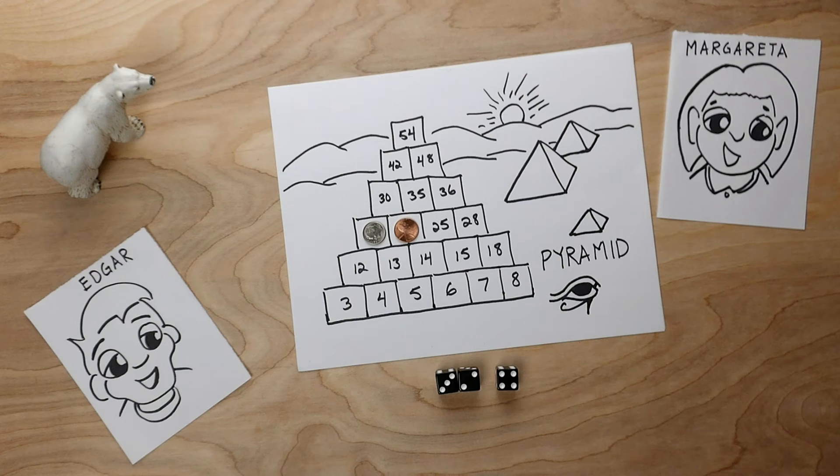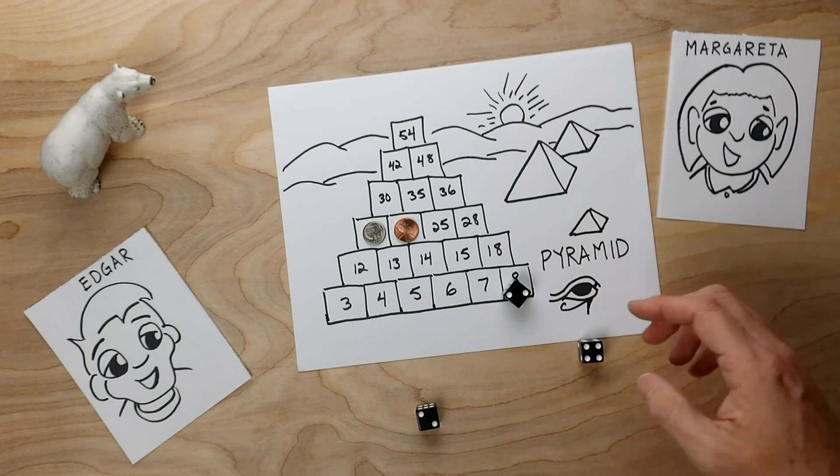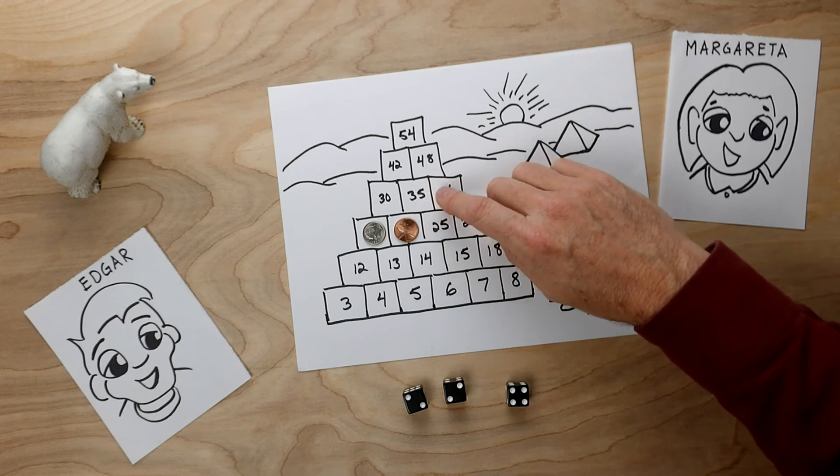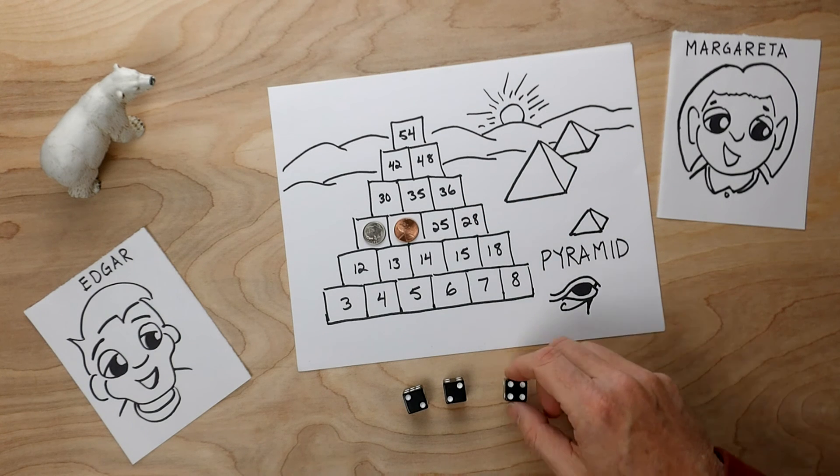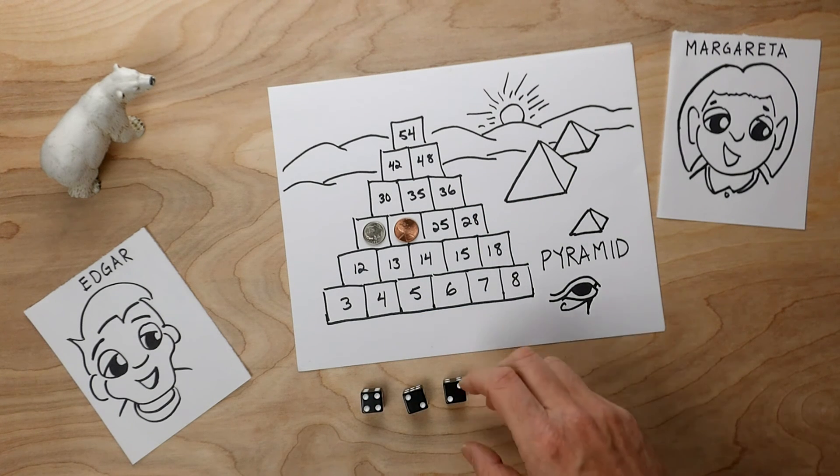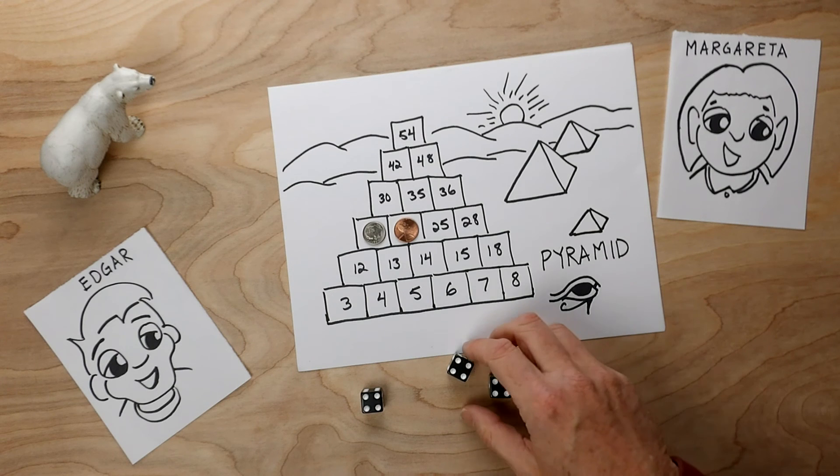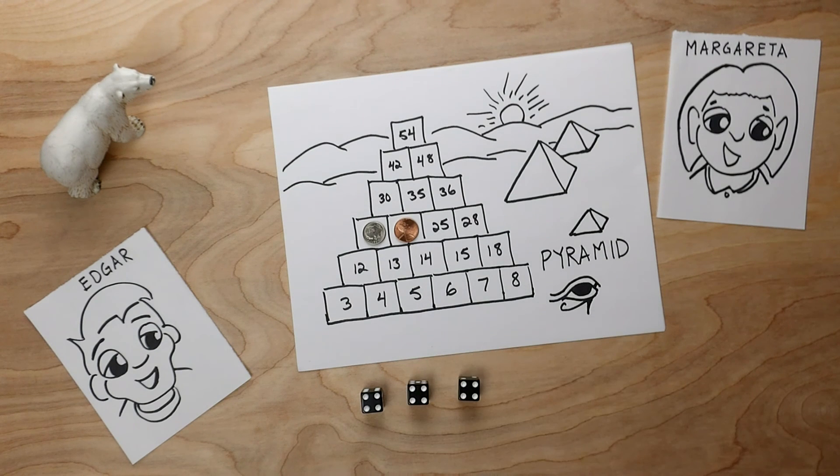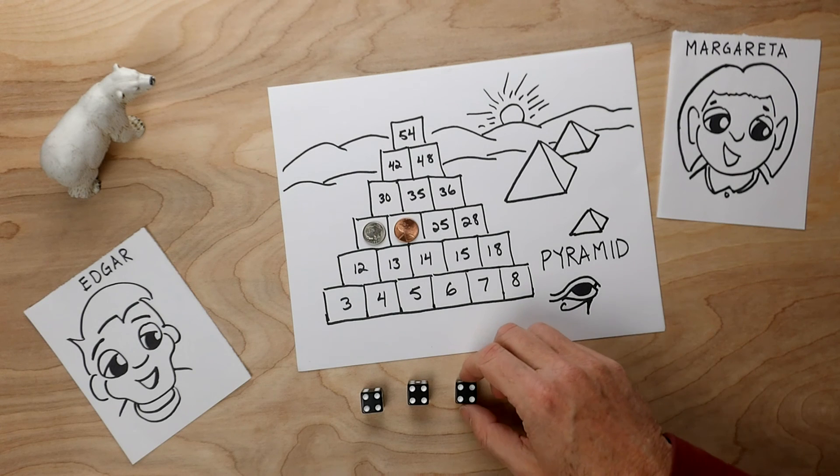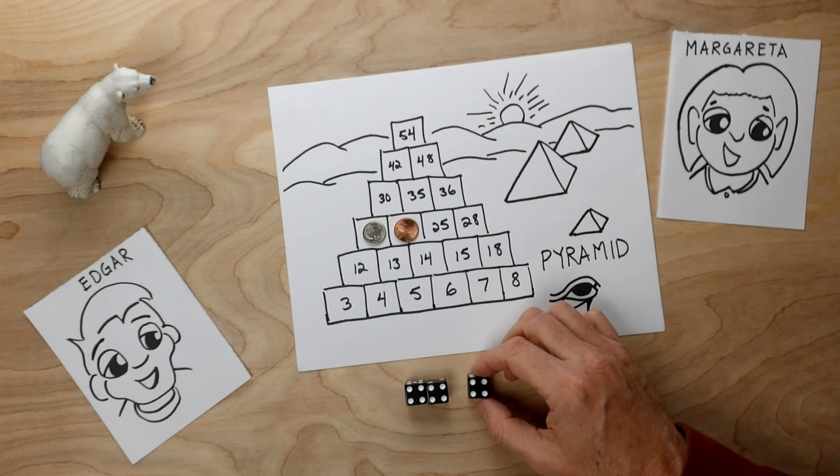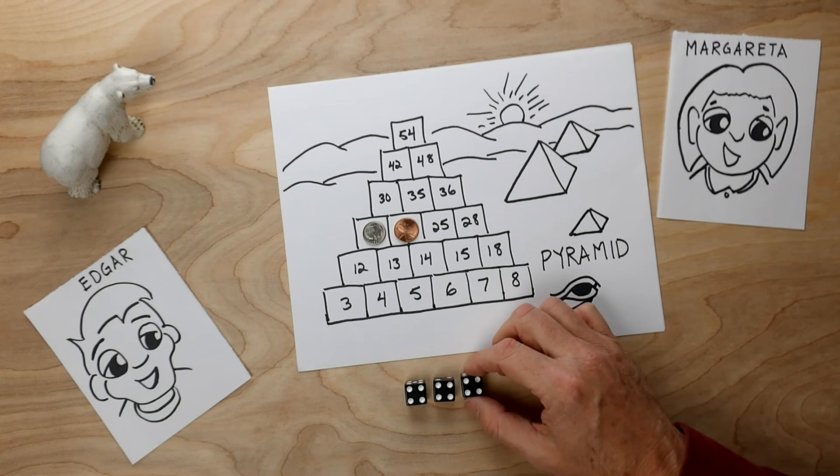Okay, Edgar's turn. Edgar rolls a two, a two, and a four. And Edgar's trying to make 30, 35, or 36. Edgar likes the four. And these two are just a little too small. So Edgar rolls these again. Oh, a four, a four, and a four. Let's think about this for a moment. Edgar looks and says, four times four is 16, plus four makes 20, times four is too much. Edgar's looking at the possibilities of 30, 35, and 36. And Edgar sees no possibility. So Edgar has to stay on the level of the pyramid where he is right now.